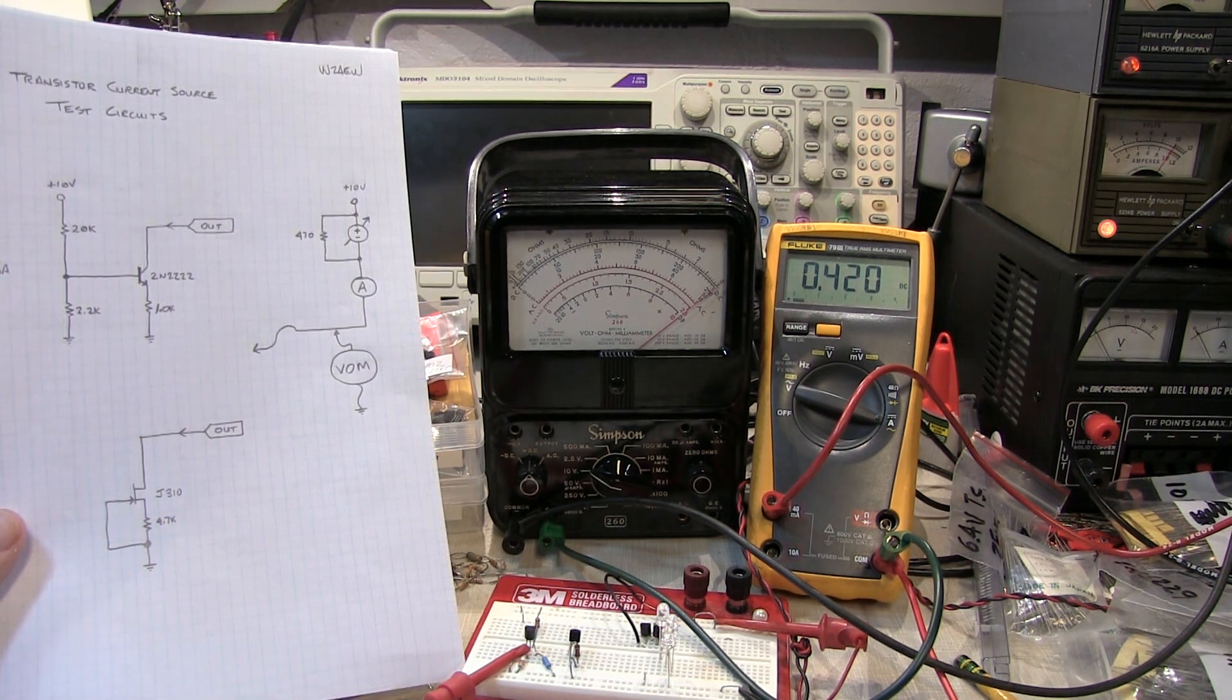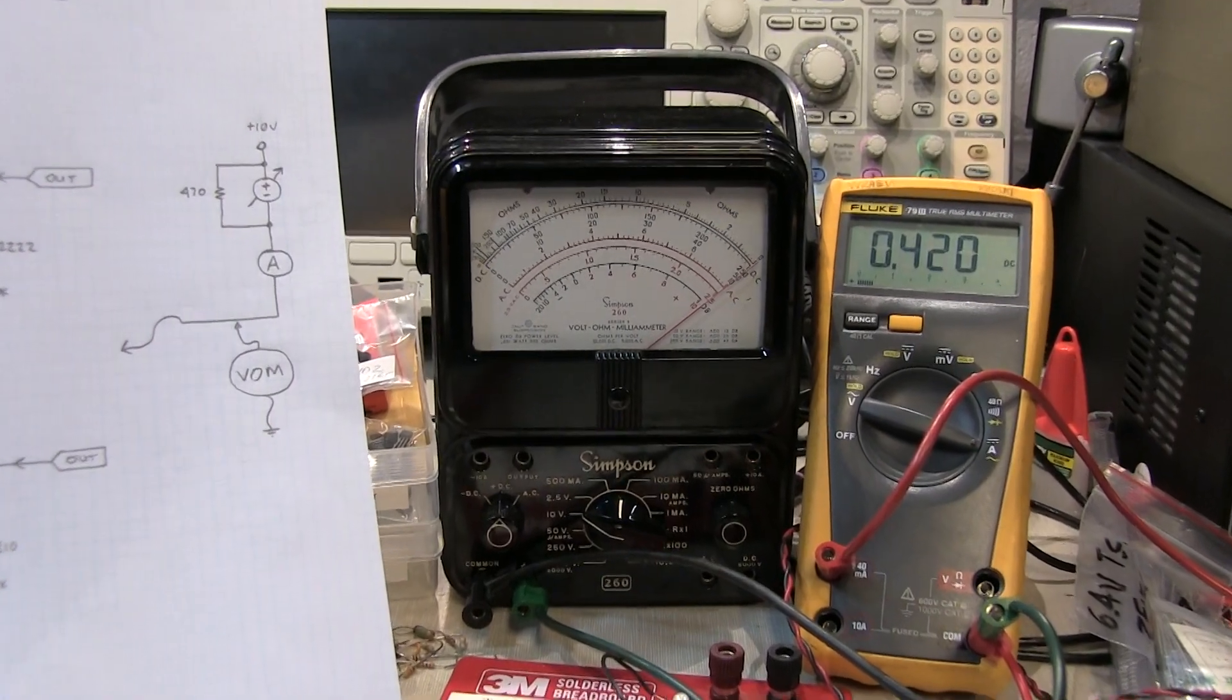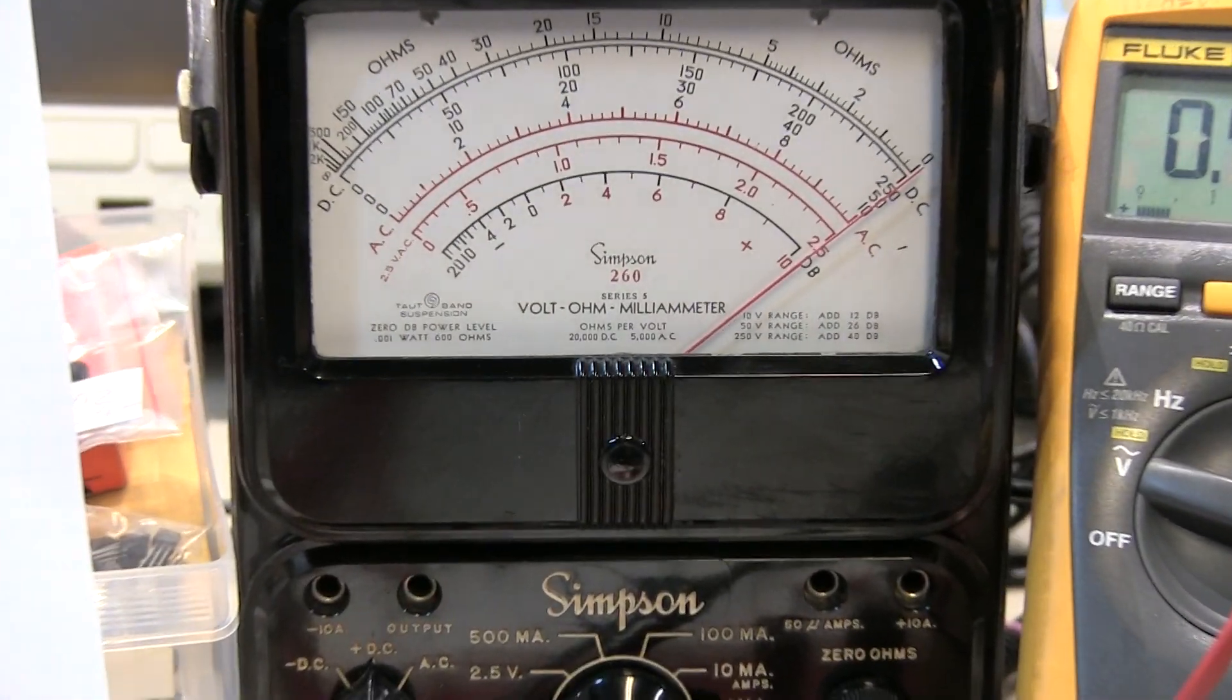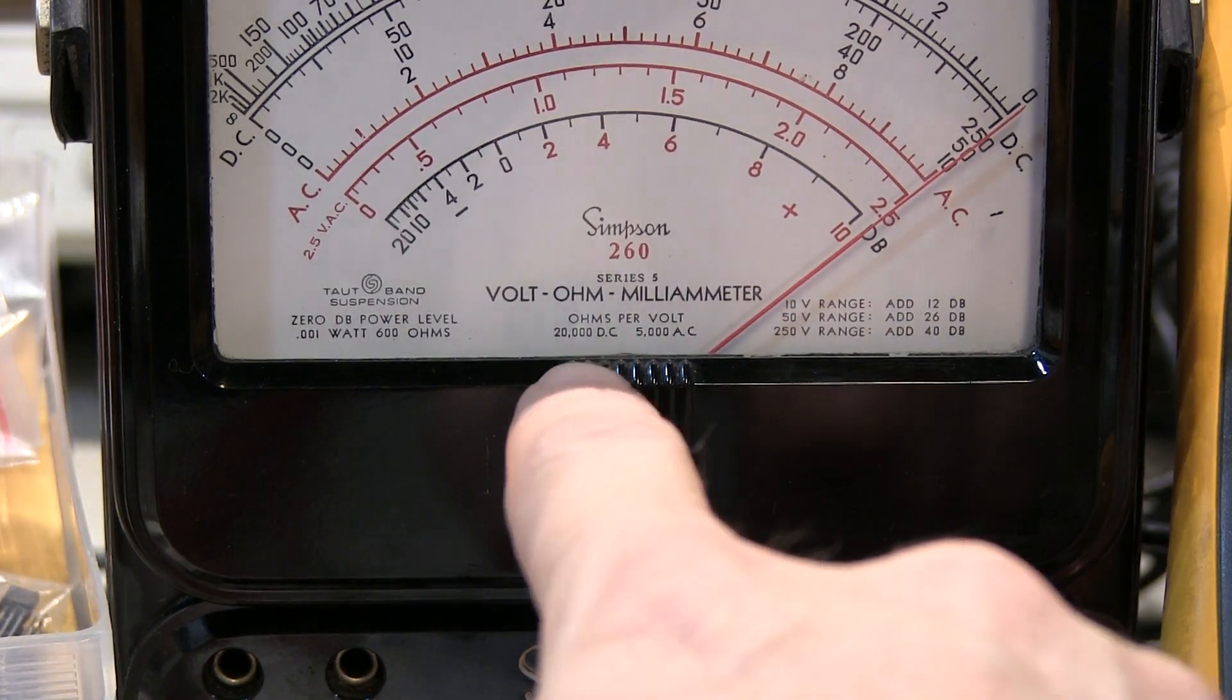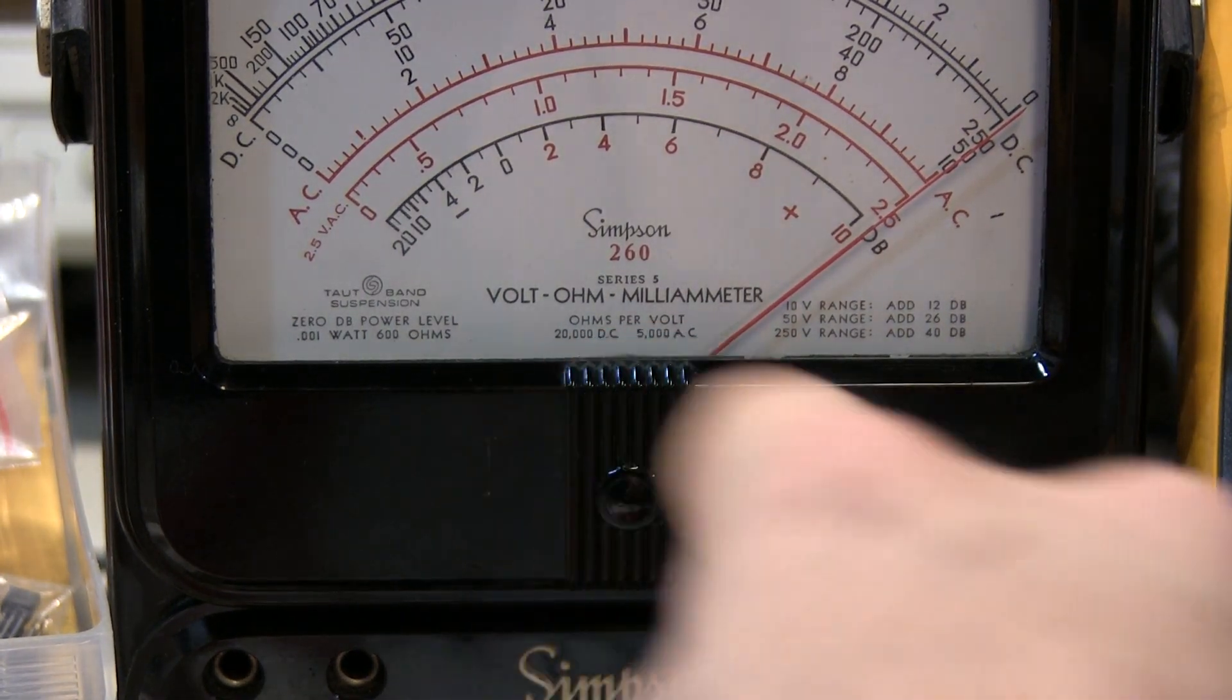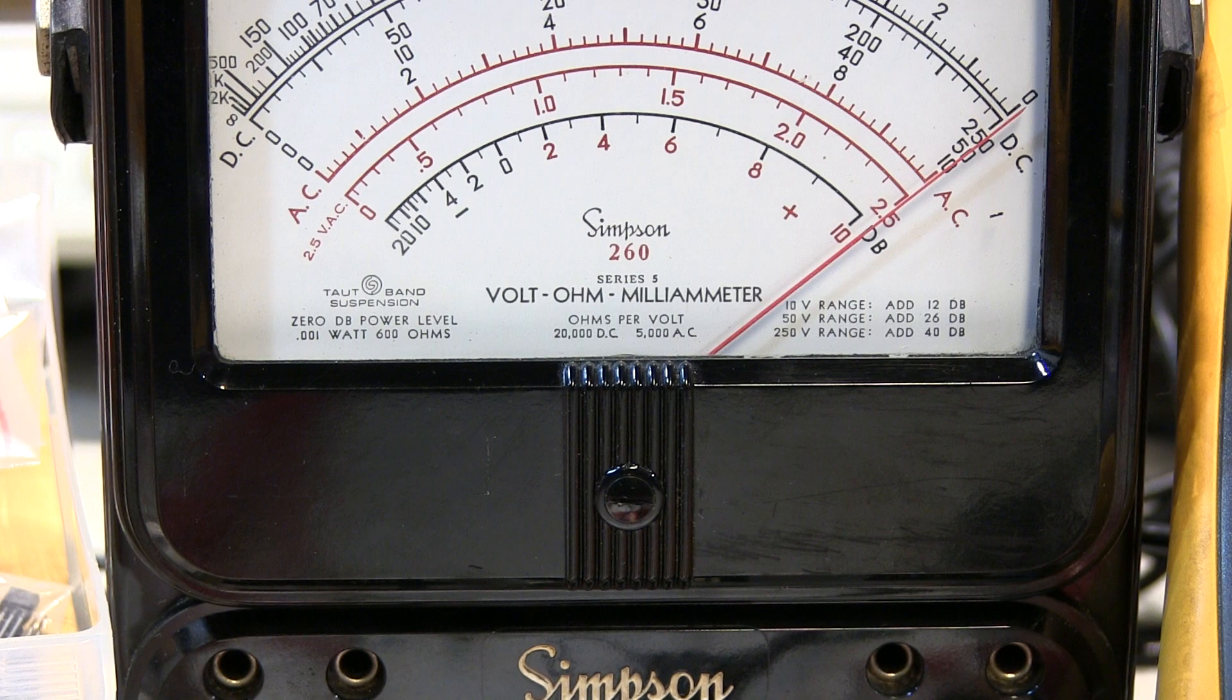Now if we zoom in on the face of the Simpson 260 meter here, I'll give a clue as to where the problem lies. We can see it says here on the meter, sensitivity is 20,000 ohms per volt. In other words, what that means is that the meter movement is a 50 microamp meter movement. So when you have it on a 1 volt scale, there's 20,000 ohms in series with the meter movement.